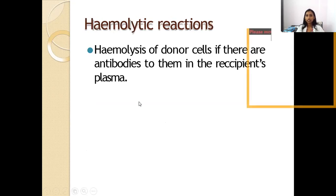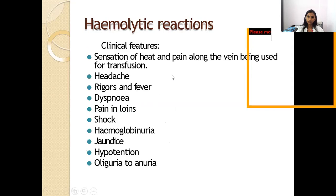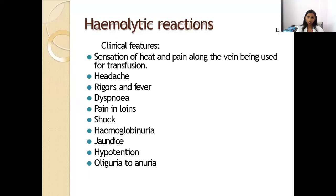Hemolytic reactions occur when there is hemolysis of donor cells if there are antibodies to them in the recipient's plasma. Clinical features include sensation of heat and pain along the vein, headache, rigor, fever, dyspnea, pain in the loin, shock, hemoglobinuria, jaundice, hypotension, and oliguria to anuria.